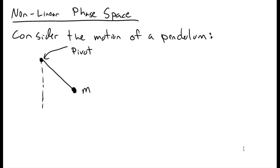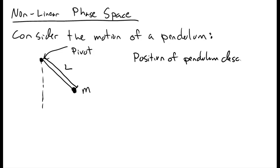The real power of using phase space comes when we consider nonlinear systems. Let's consider the motion of a pendulum — it's attached to a pivot, with some mass m on some string or rod of length L. We're interested in describing the position of the pendulum, which means we want to describe the angle theta, which varies as a function of time.